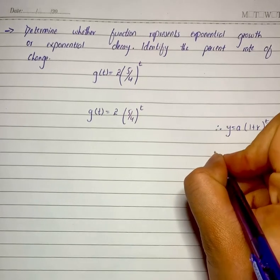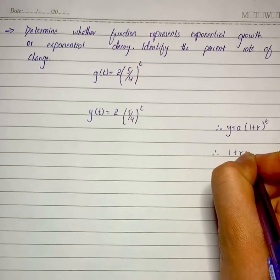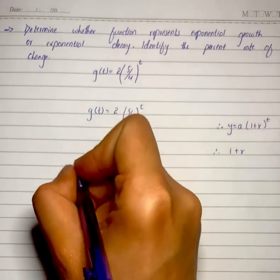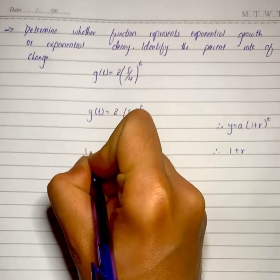So let's put the value. It will become 1+r equals 5/4.